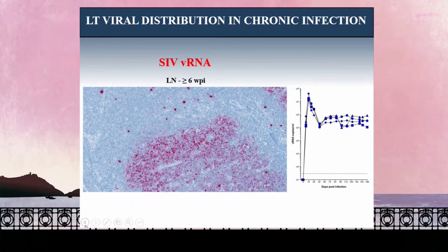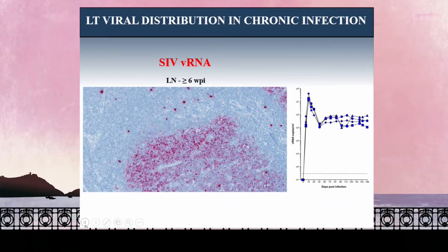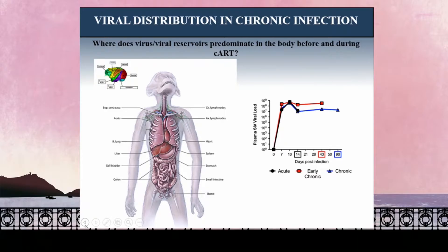Taking this out several weeks later at set point, you can see the animals are at set point and will stay this way until they begin to progress to end stage. You can appreciate the massive abundance of virus deposited on the follicular dendritic cell network throughout all of the B cell follicles, as well as the productively infected cells within the T cell zone and follicle. Depending on when you sample the lymph node, the pattern and distribution of viruses can be very different.